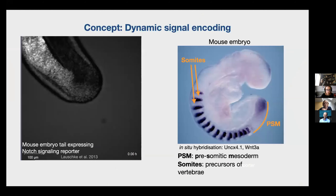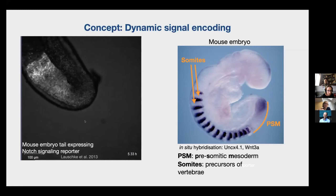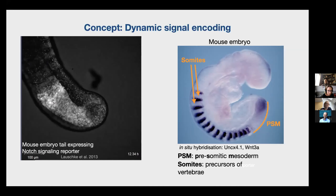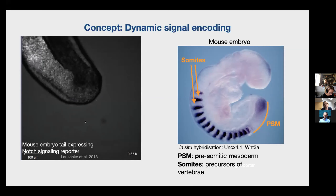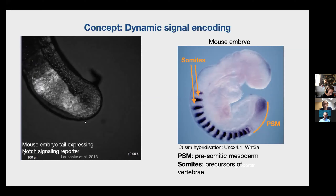Going back to the example from the title slide, this is the tail of a developing mouse embryo. Here on the right you see a mouse embryo — that's the head — and along the back of the embryo, segments form periodically: every two and a half hours a new segment forms. We know this is controlled by Notch signaling. On the left you see such an embryonic tail expressing a Notch signaling reporter, showing remarkable dynamics of Notch signaling activity going through the tissue. Whenever such a wave reaches the anterior site, a new segment forms and another wave starts.